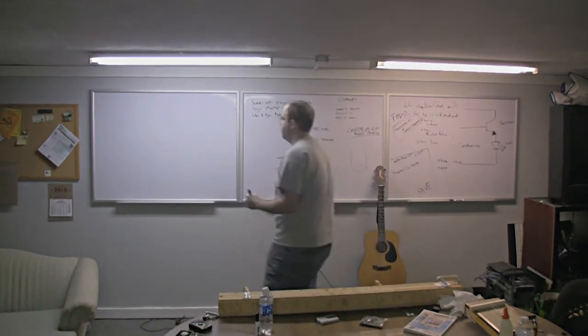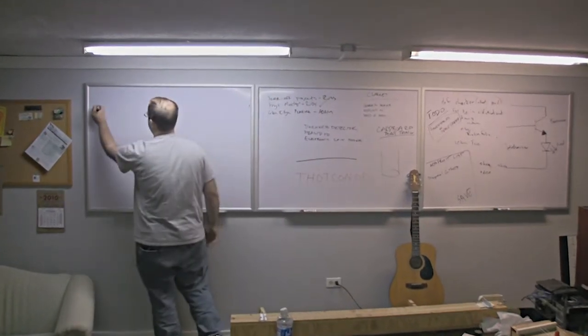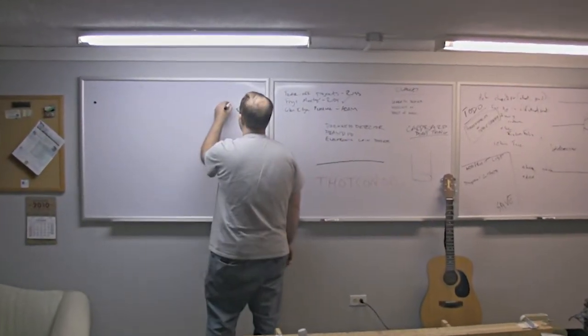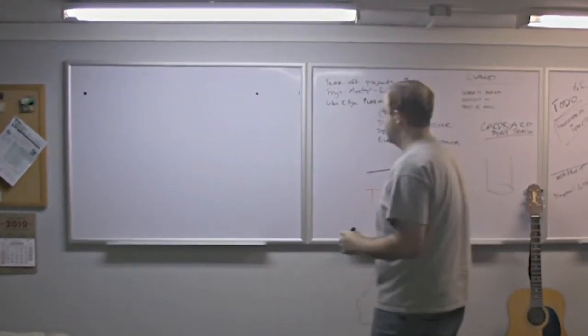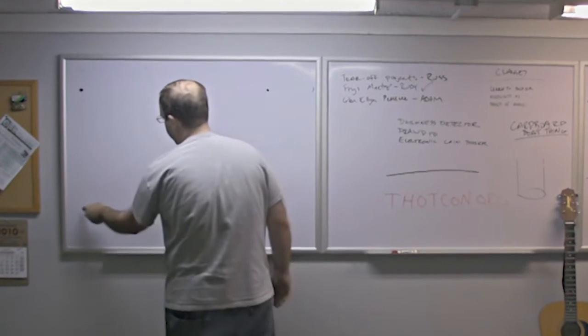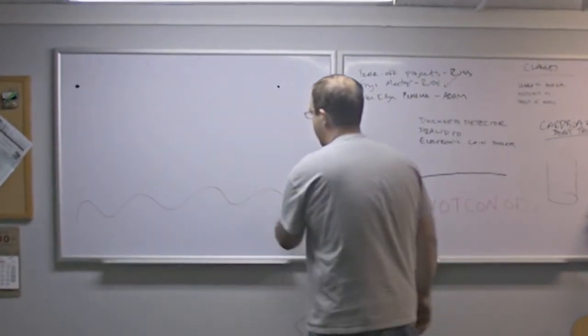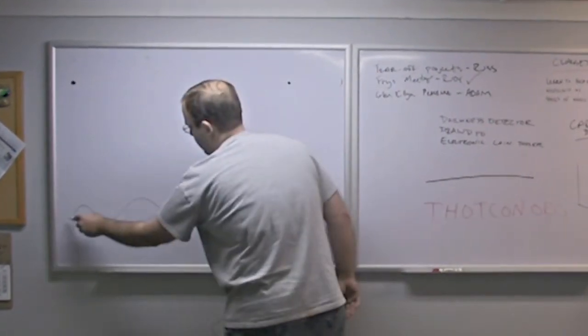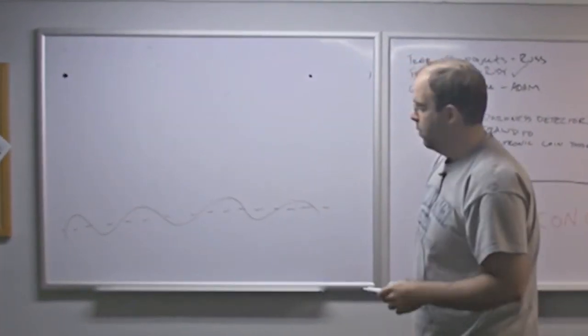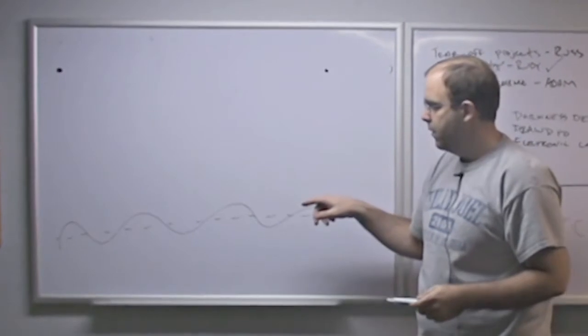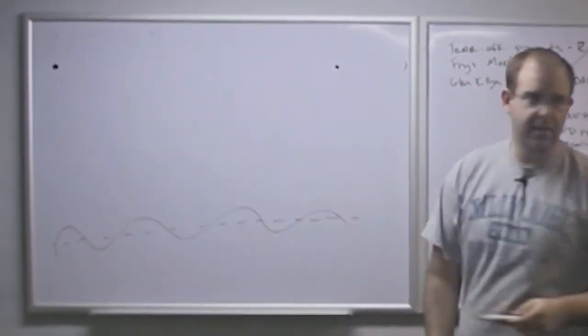So we consider those to be fixed endpoints. And then, to find the resonances, all we do is we look at the sections of a wave. If I draw an example wave down here, where I have my equilibrium, we're looking for sections of a wave that fit those boundary conditions.